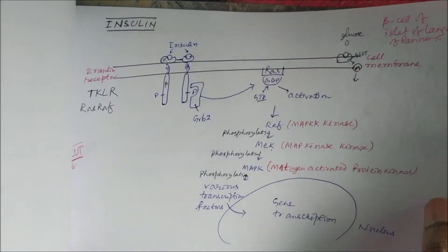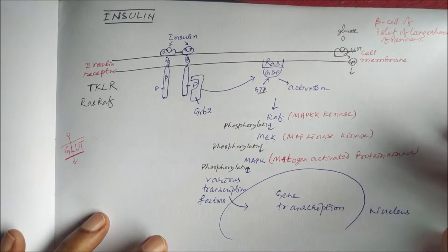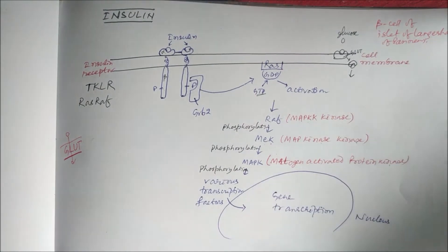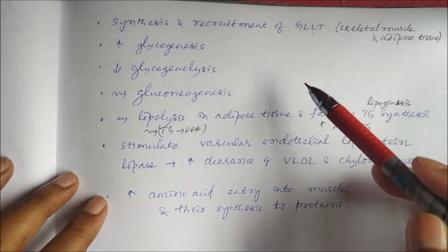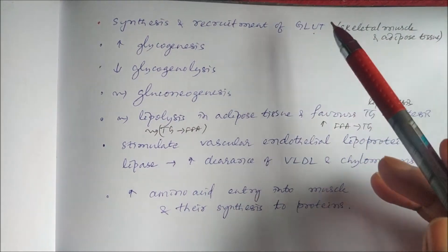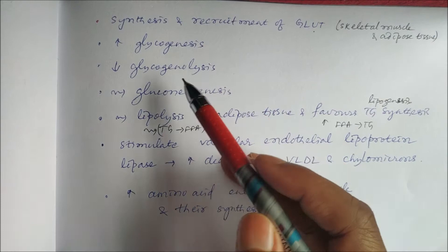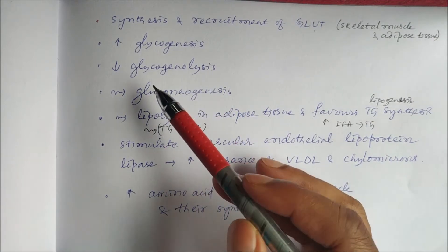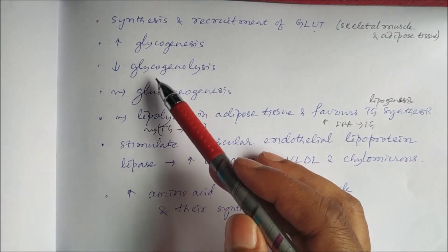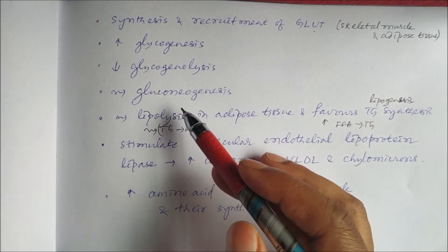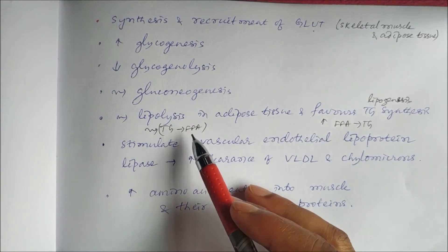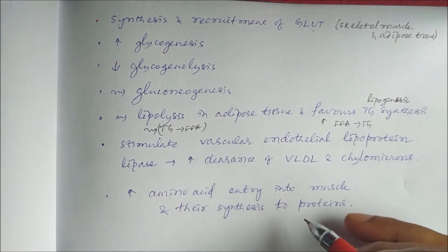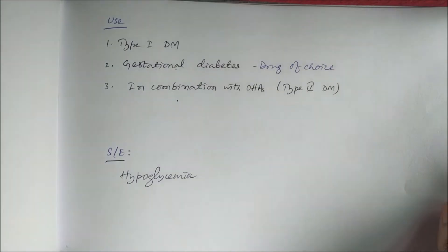Insulin mainly regulates the glucose level by acting on the insulin receptor. It causes synthesis and recruitment of glucose transporters, increases the transcription of enzymes involved in glycogenesis, and decreases those enzymes involved in glycogenolysis and gluconeogenesis. It also inhibits lipolysis, favors lipogenesis, and increases amino acid entry into muscle, causing protein synthesis.